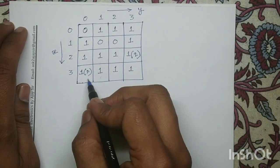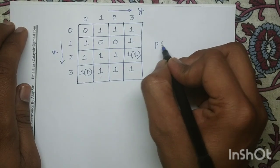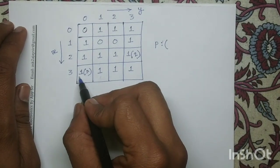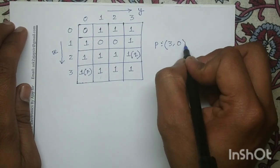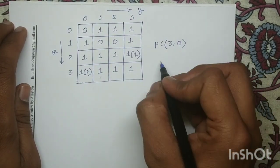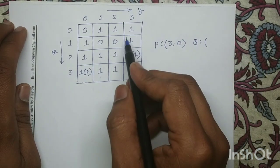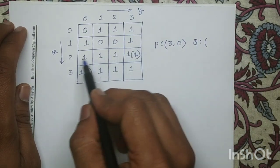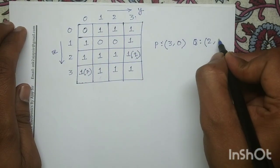The coordinate of pixel P is: along X it is 3, along Y it is 0. So it is (3,0). And the coordinate of pixel Q is: along X it is 2, along Y it is 3. So it is (2,3).